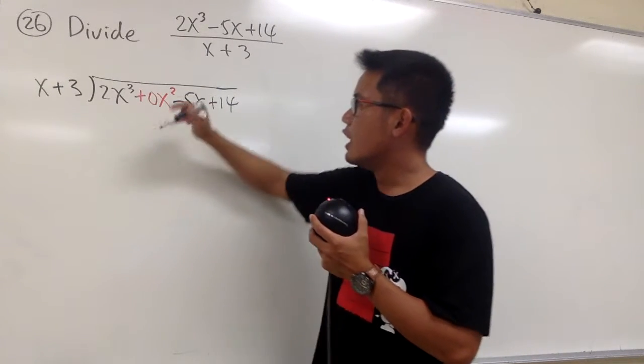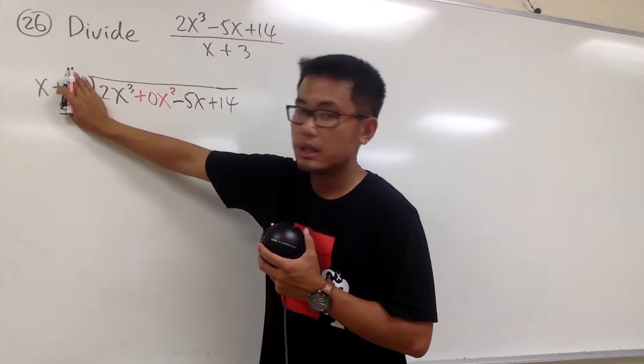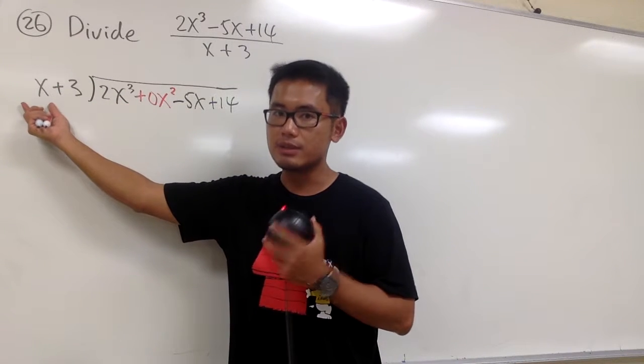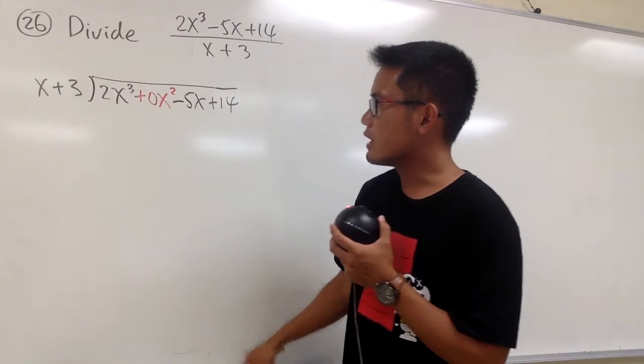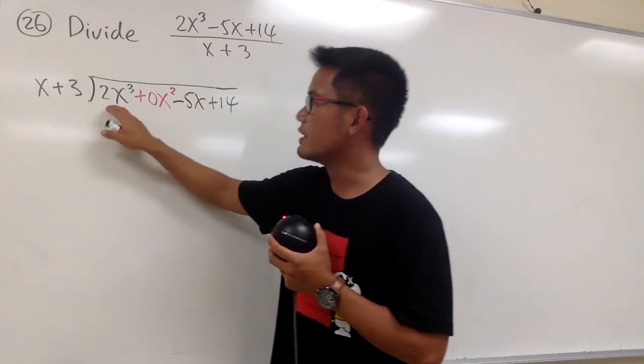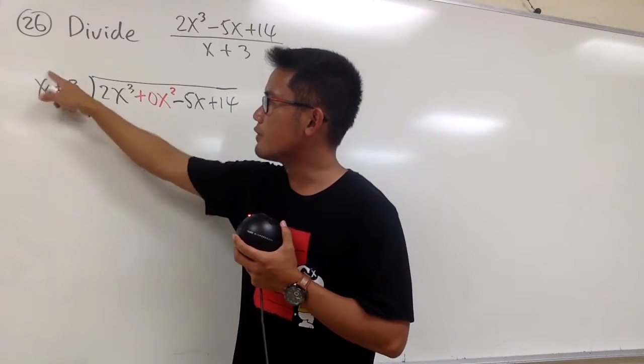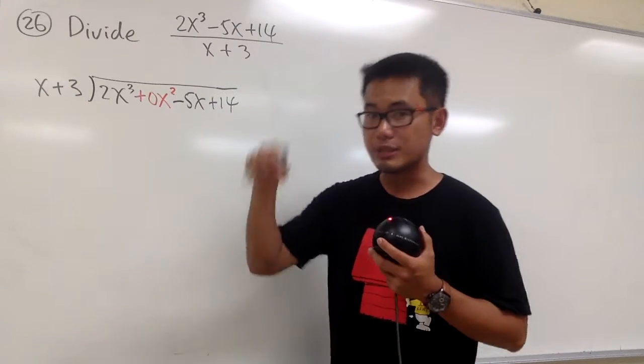So to do this, we can cover everything except for the first term inside, and then the first term outside. So these are the focus. We are going to ask ourselves, what times x will give us 2x to the third power? You see, this is just x to the first power, so I must have x to the second power, right?